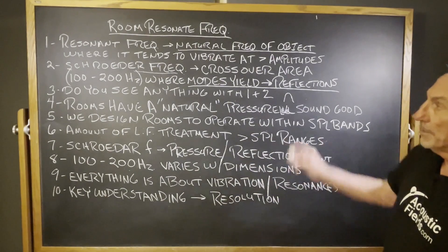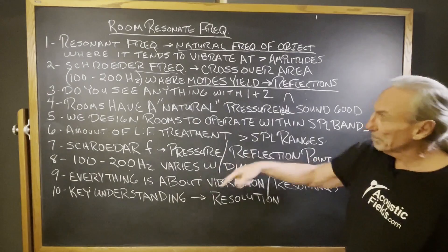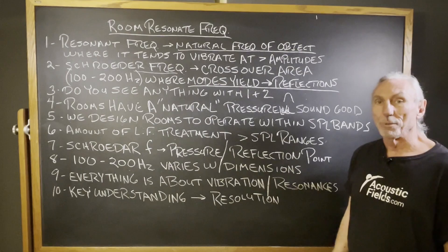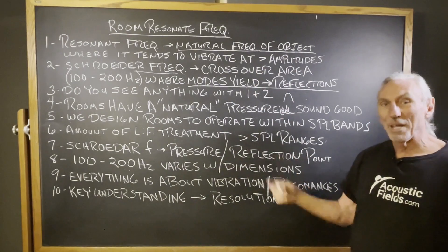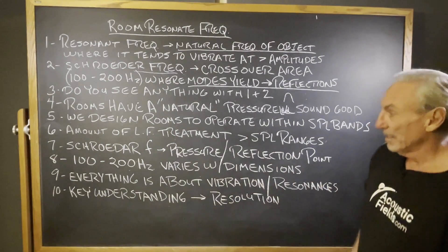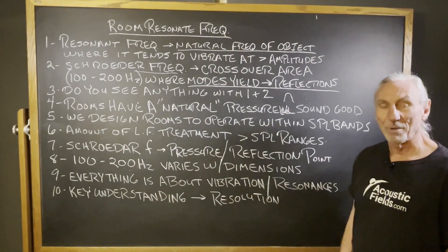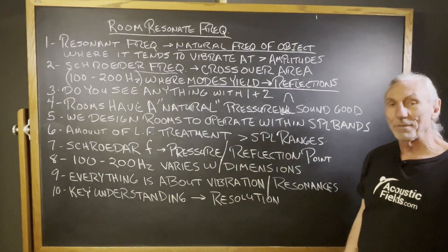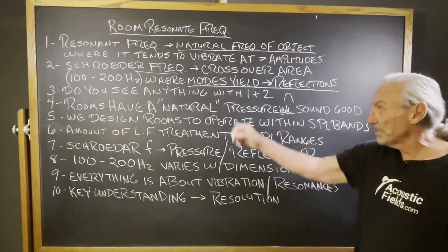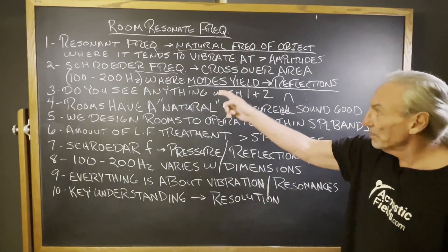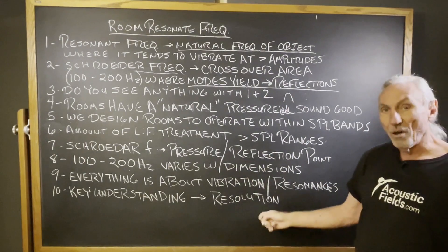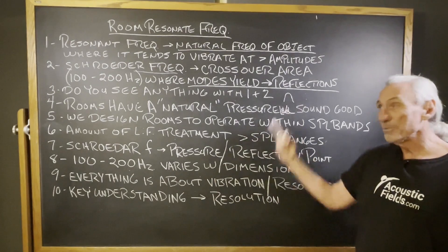Shorter frequency pressure reflection point. So we're going to decrease the pressure in the room, and then in that 100 to 200 cycle range we're going to start treating for reflections. The resonant frequency of the room — the way it moves and vibrates — if you think about it, every system, everything is about vibration and resonances. All of these resonances and vibrations and the frequency range where pressure and reflections overreact with each other all contribute to room resolution, and you have to address those issues.